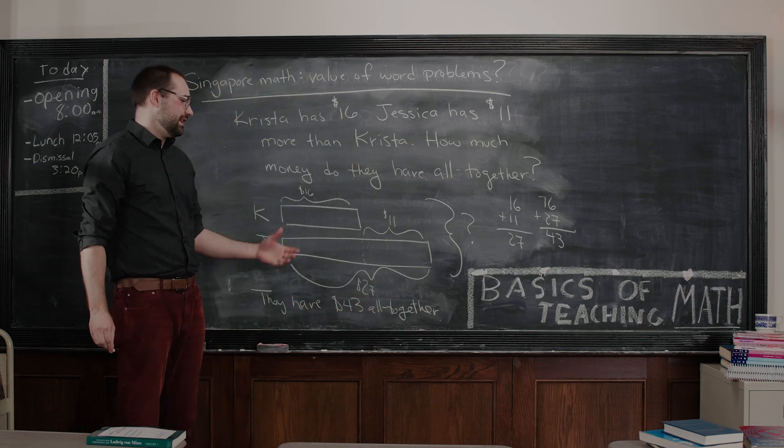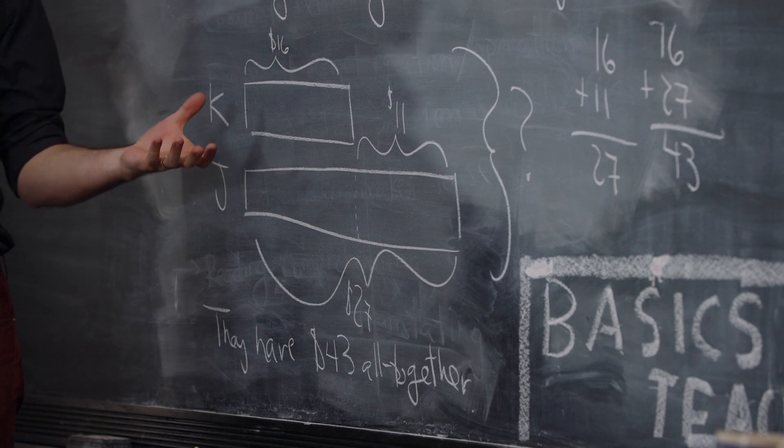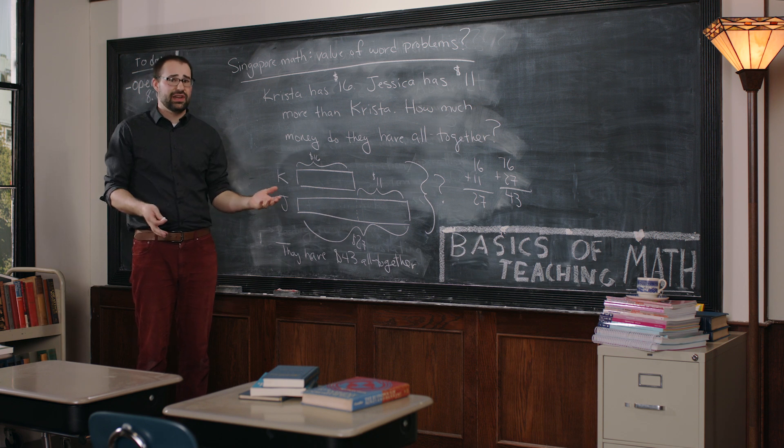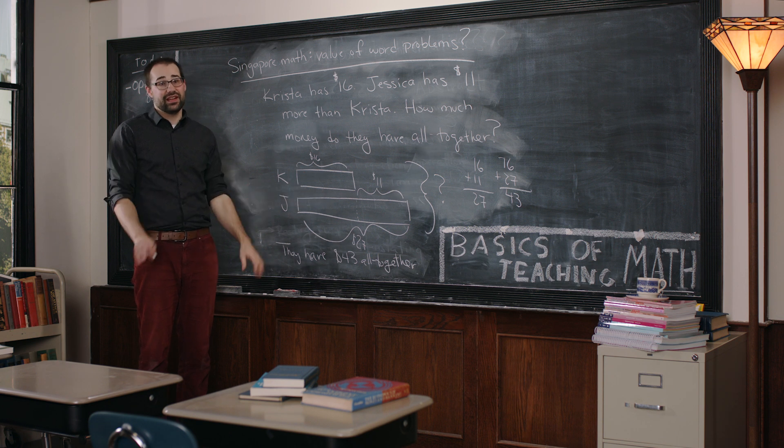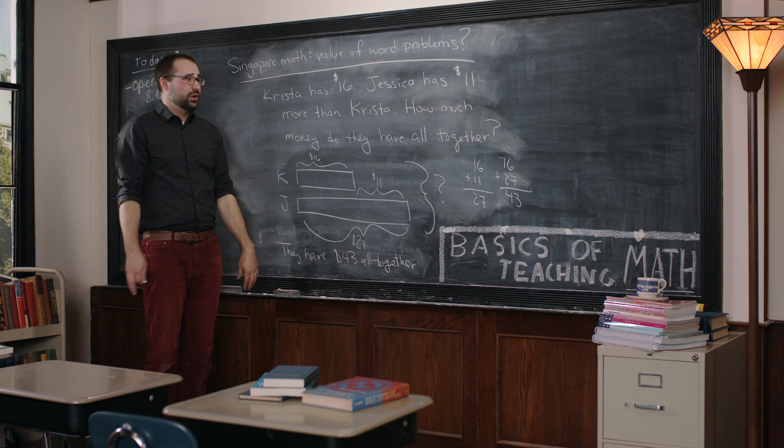Hopefully you can see the value of bar modeling in taking the most difficult parts of this problem. Why shouldn't I just add 16 and 11 and be done with it? What operations do I choose? How do I know to do two steps in this problem? Once I've drawn this picture, it's abundantly clear why I need to go and do these things. Value this pictorial approach that Singapore mathematics has.